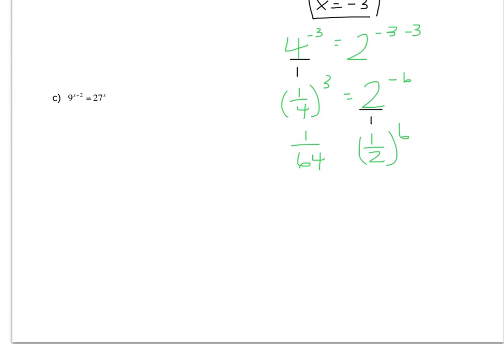We just have one more step to do. 2 to the 6th is 64, so I can see that I get 1 over 64 on both sides, and so I know that x must be negative 3.